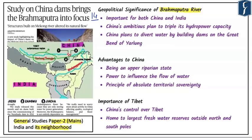Three important locations have been identified because three dams are being built on this river. The first is Ziku, the second is Zagmu, and the third is Zaicha. These dams are very important from the perspective of the upcoming prelims examination, and you should be very clear about their location and the river.